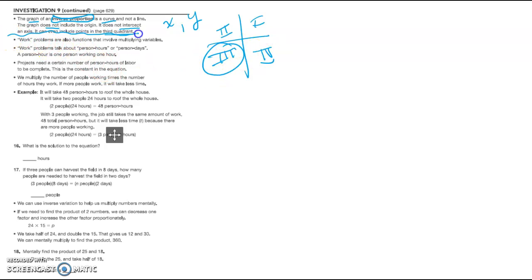Now we start something a little bit new. Work problems are also functions. Work problems talk about person hours or person days, so a person hour is one person working one hour. Projects need a certain number of person hours of labor to complete, and this is a constant in the equation. This is a lot of math speak. Let's get down to what it actually looks like.